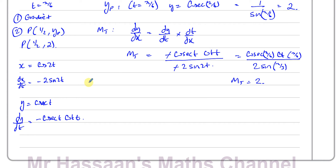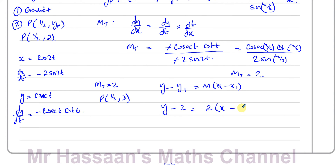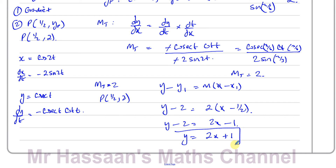The gradient of the tangent is 2 and the point is (1/2, 2). Note: if the question asked for the normal, the gradient would be the negative reciprocal, -1/2. But here it's the tangent. Using y - y₁ = m(x - x₁): y - 2 = 2(x - 1/2), so y - 2 = 2x - 1, therefore y = 2x + 1. That's exactly what we had to show.